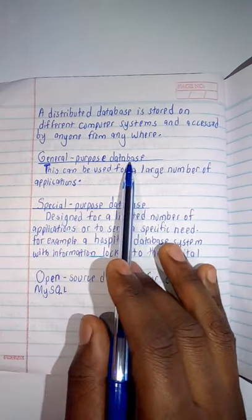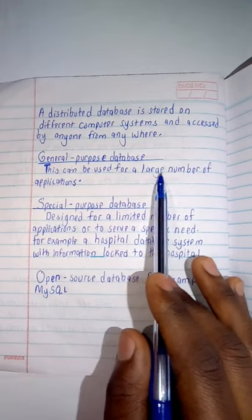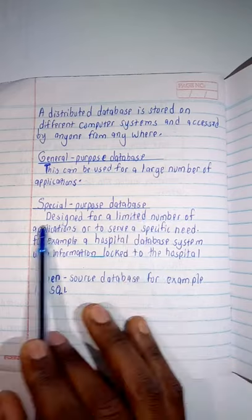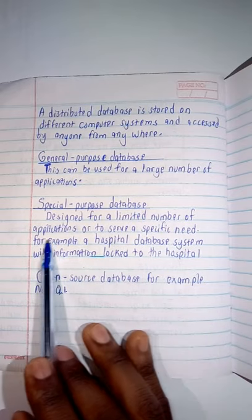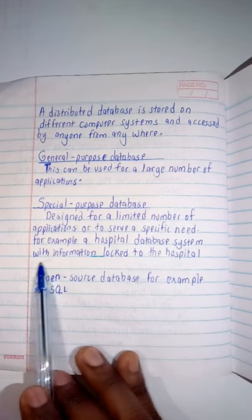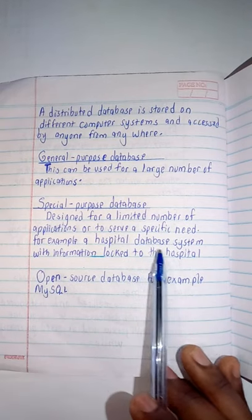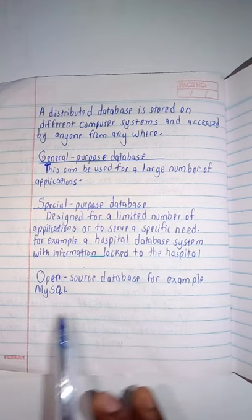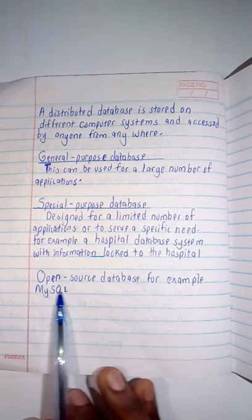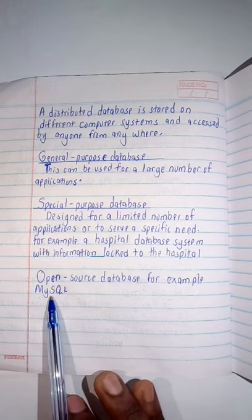We have general purpose databases, which can be used for a large number of applications. Special purpose databases are designed for a limited number of applications or to serve a specific need, for example, a hospital database system with information logged to the hospital. Then we have open source databases, for example, MySQL.